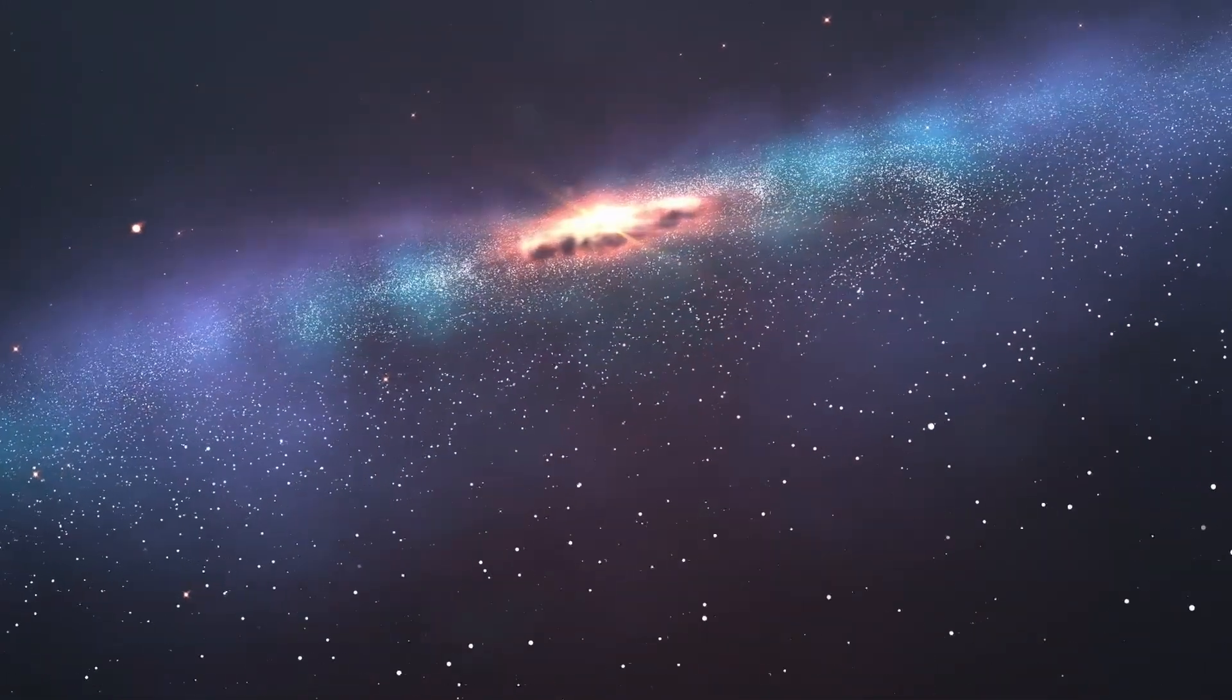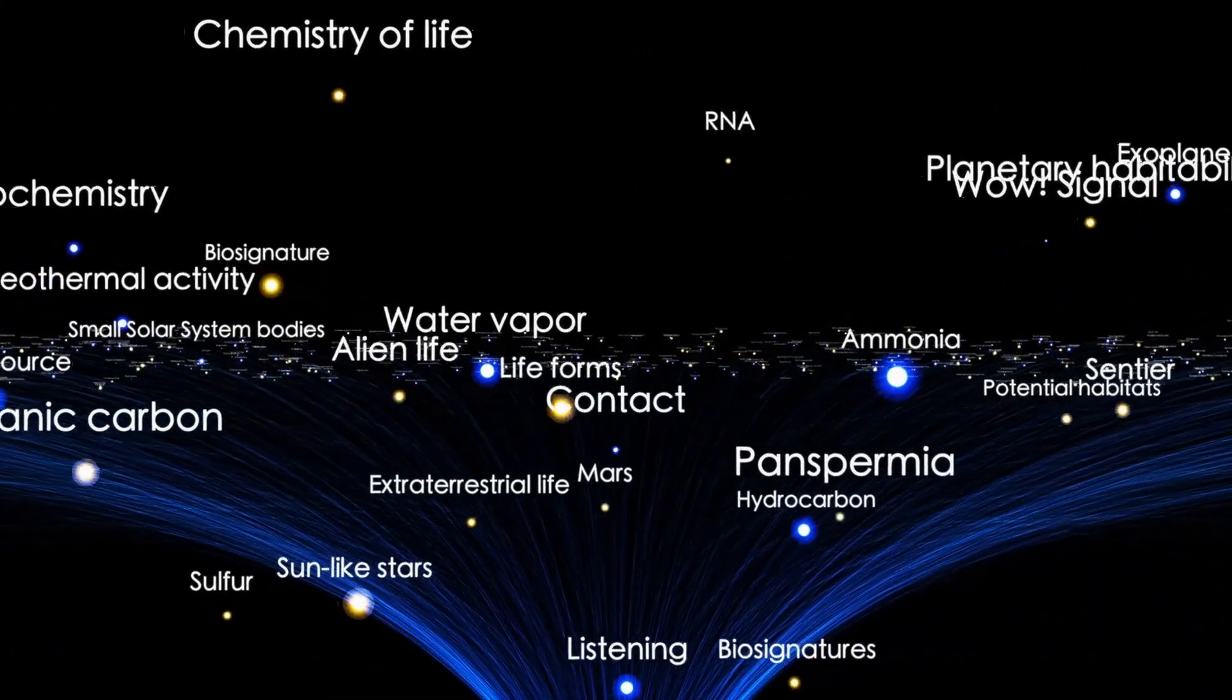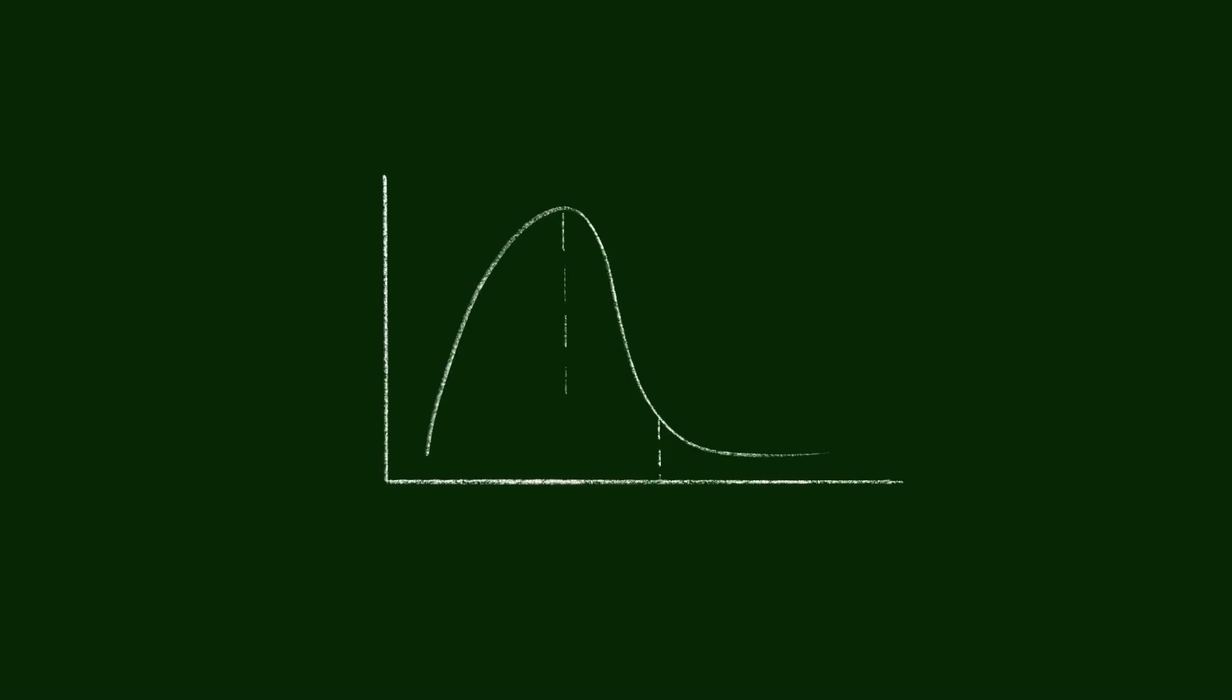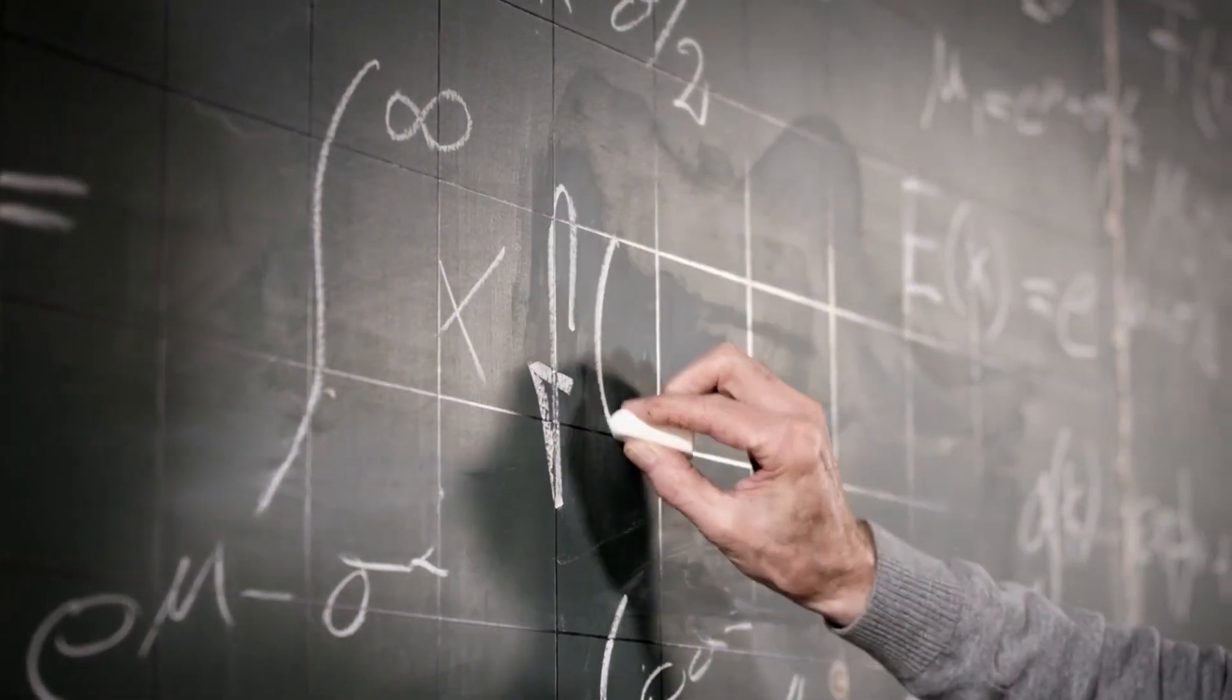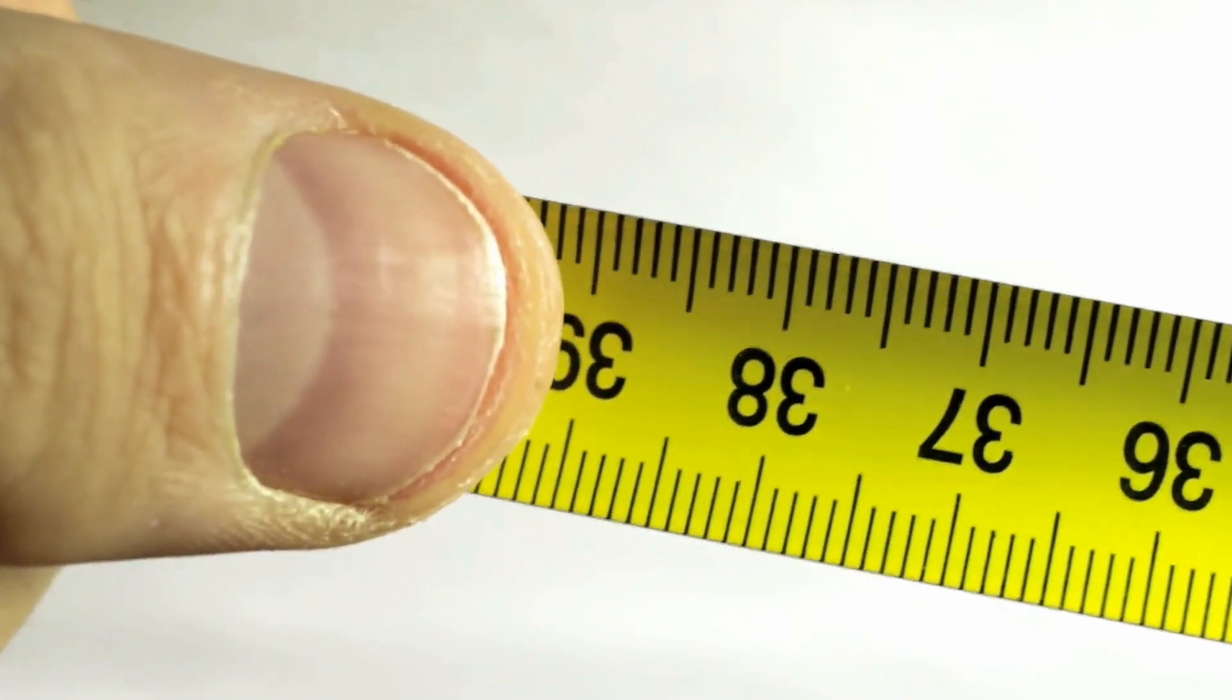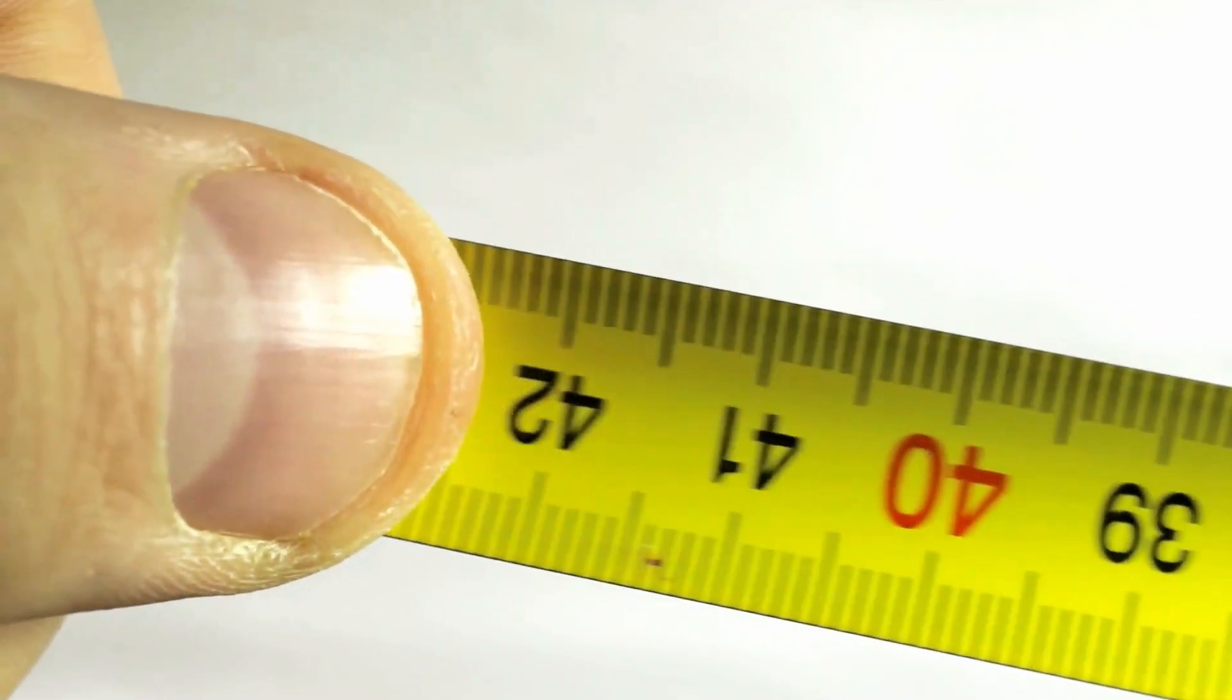Then came reports of an anti-tail, a strange, narrow tail pointing toward the sun, not away from it. Anti-tails are rare and often the result of specific viewing angles and unusual dust patterns. But this one stood out. It held together too well with unusual symmetry. It hinted at a dust structure not just pushed by solar wind, but possibly ejected in a controlled jet from one side of the object.